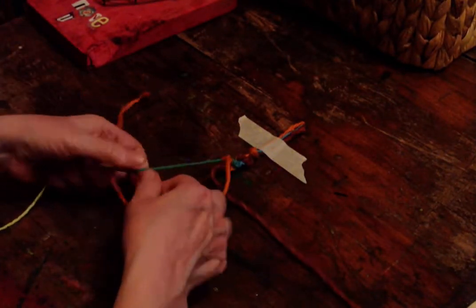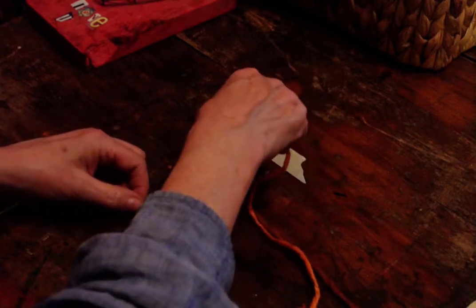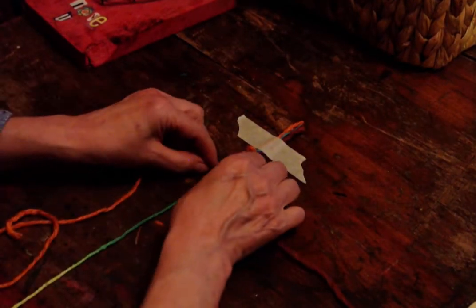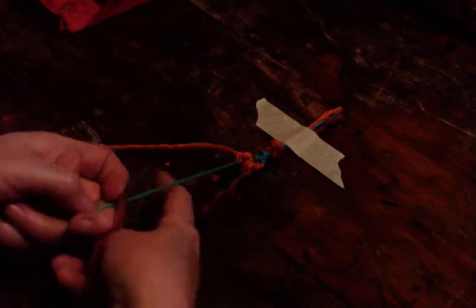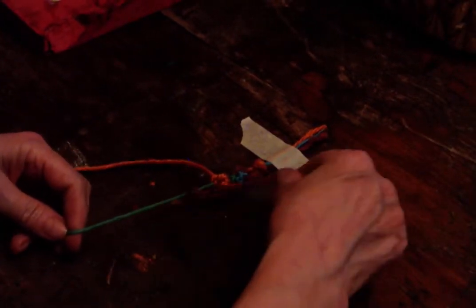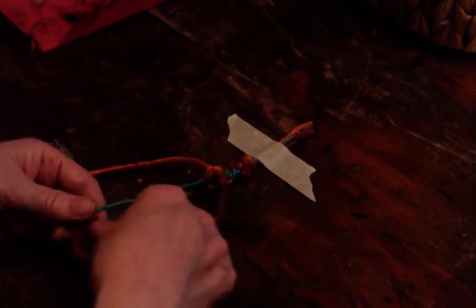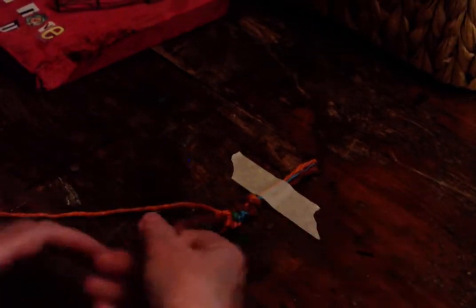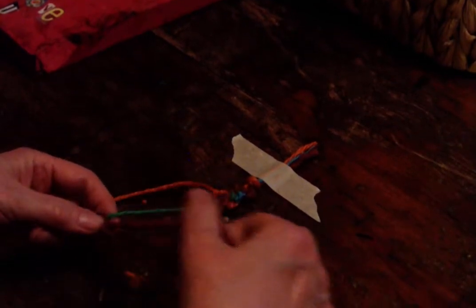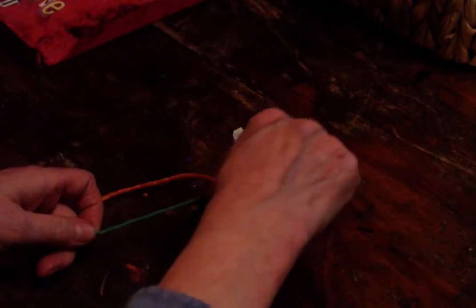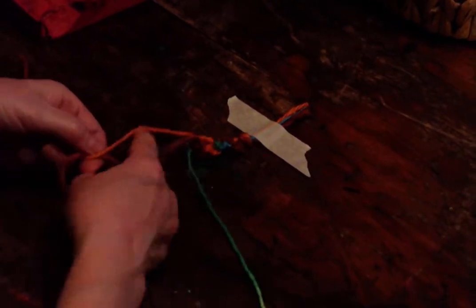When you keep going, you're going to start to see a pattern. You're going to see some stripes, and the stripes are going to be the same: the brownish yarn, the green yarn, the orange yarn, brown-green-orange, brown-green-orange, brown-green-orange, until your bracelet is the length you need it to be.